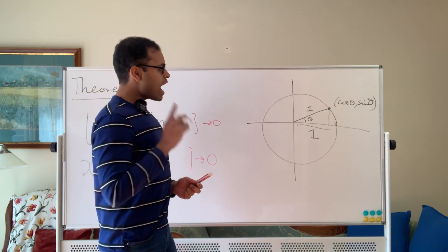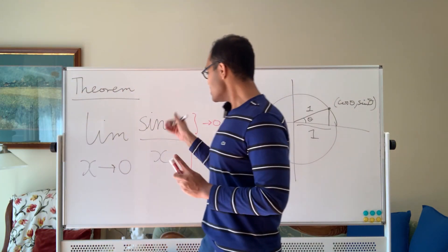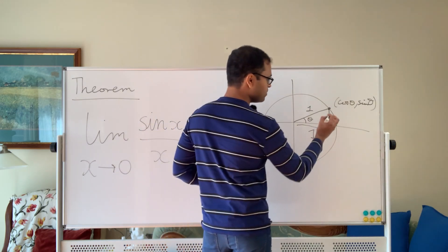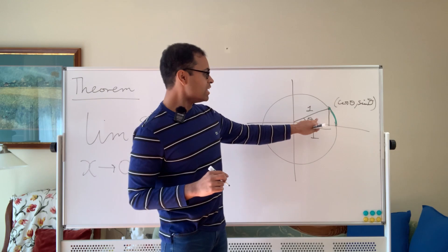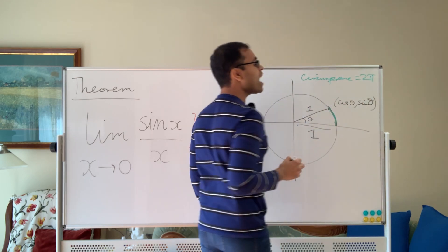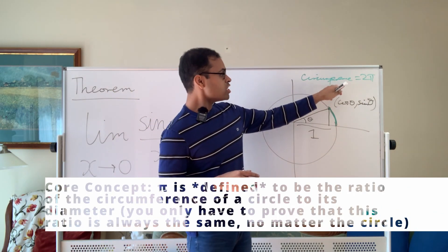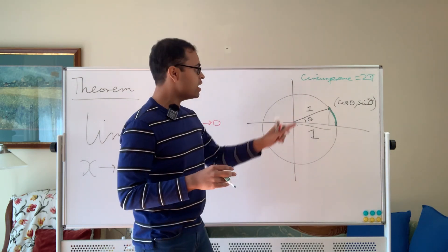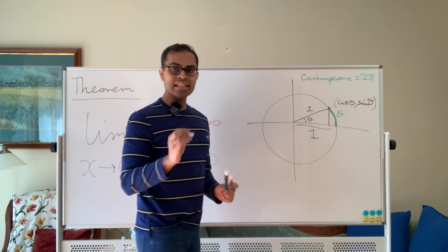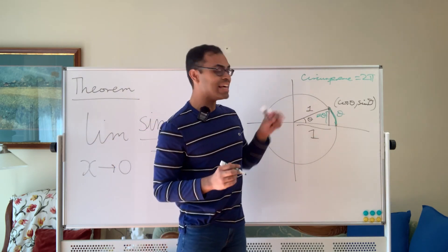We're going to sandwich sine x over x between two quantities that approach 1, and therefore show that this limit also approaches 1. The first observation: the length of this green arc — if the angle is theta, and the whole circumference of a circle of radius 1 is 2π by definition of pi — the length of this arc is just theta. And the height of this black vertical line is sine theta. The point is that the height of that black line is less than the length of the arc.